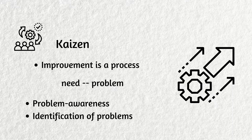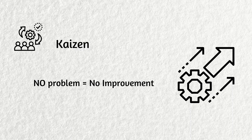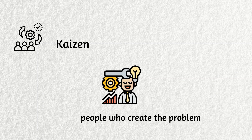Improvement is a process. The process starts with recognizing a need, and the need becomes apparent when you recognize a problem. Kaizen emphasizes problem awareness and will lead to the identification of problems. When there are no problems, there is no potential for improvement. When a problem is identified, Kaizen is working.